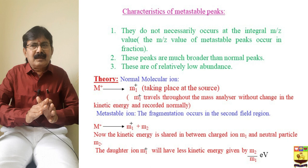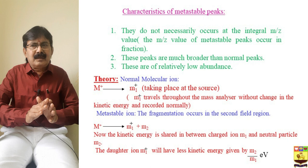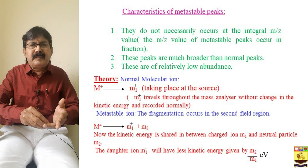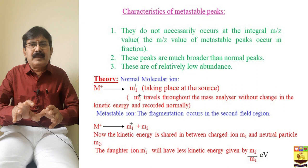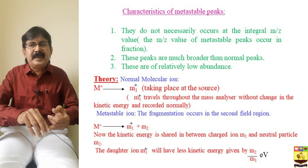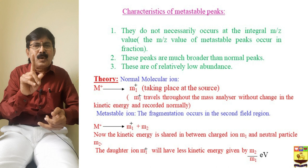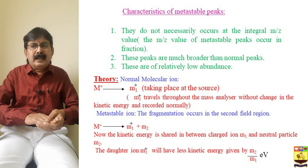The characteristics of the metastable peak: they do not necessarily occur at integral m/z values — not at 50, 51, 53, 90, 91, 102 etc. — but at fractional values such as 64.5, 78.2, or 80.6 and so on. Second, these peaks are much broader than normal peaks, not sharp but broad. Third, they are of relatively low abundance.